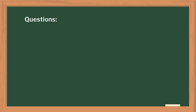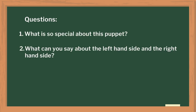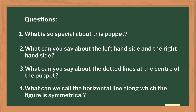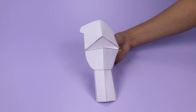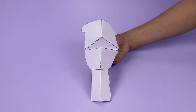After the activity, to initiate a discussion, I asked students: What is so special about this puppet? What can you say about the left hand side and the right hand side? What can you say about the dotted lines at the centre of the puppet? I pointed out the axis of symmetry and asked them what we can call the horizontal and vertical lines along which the figure is symmetrical.